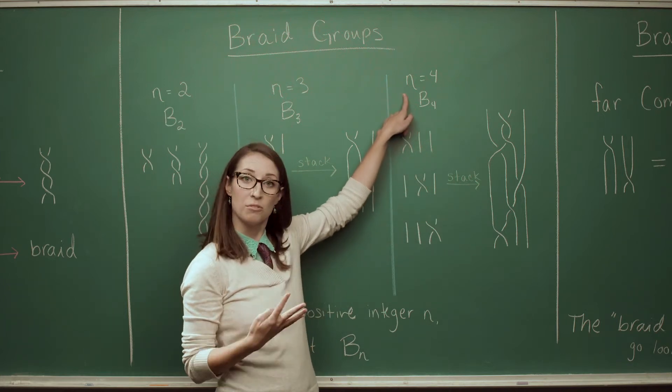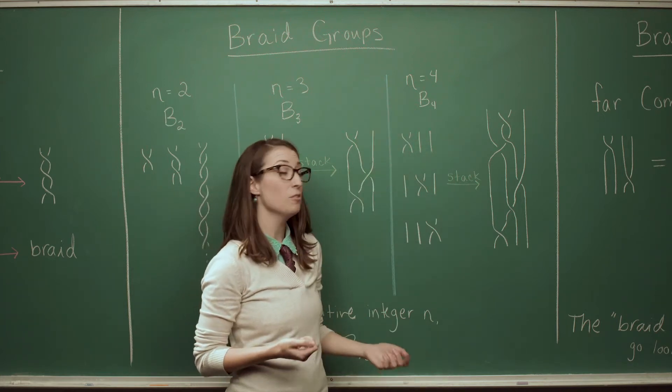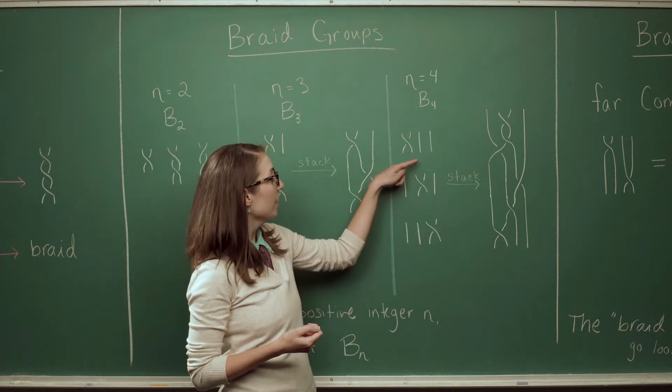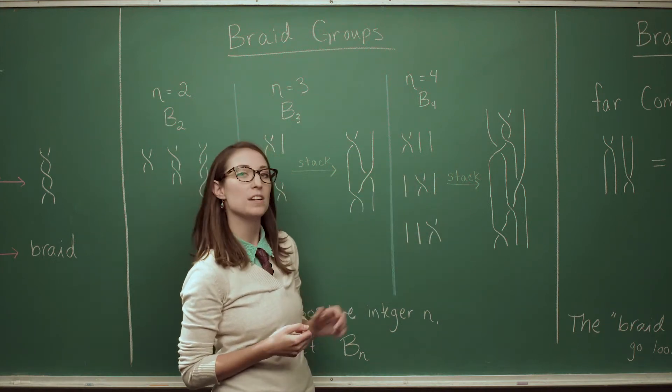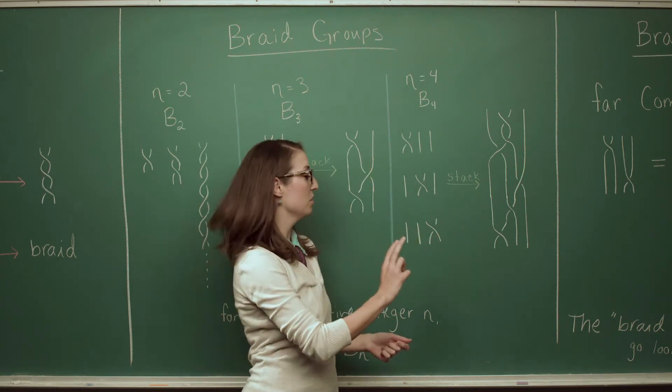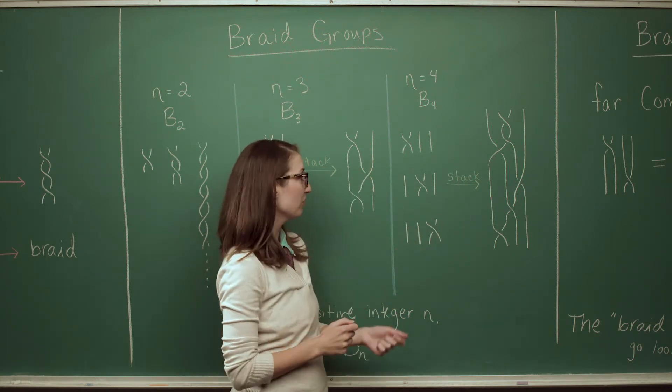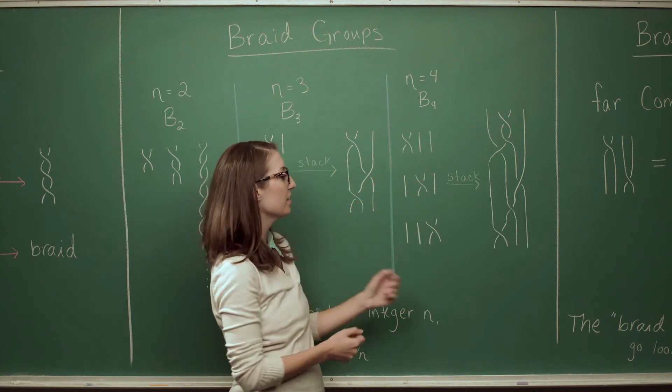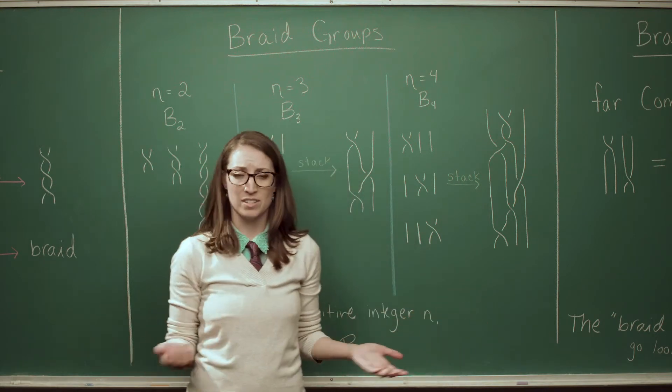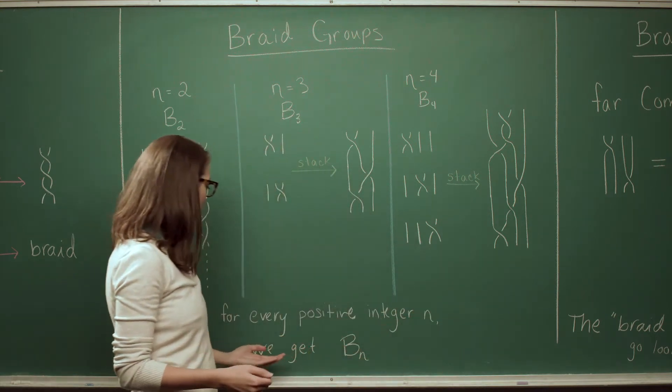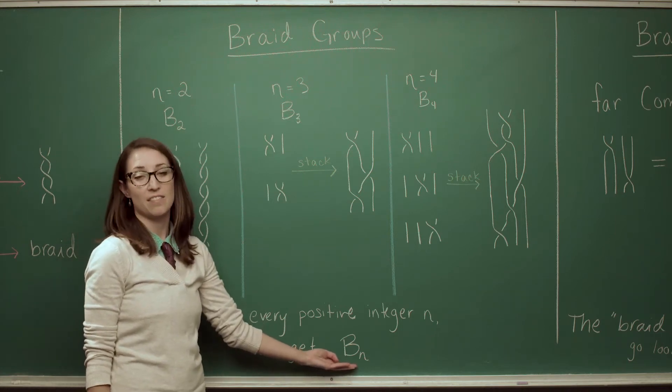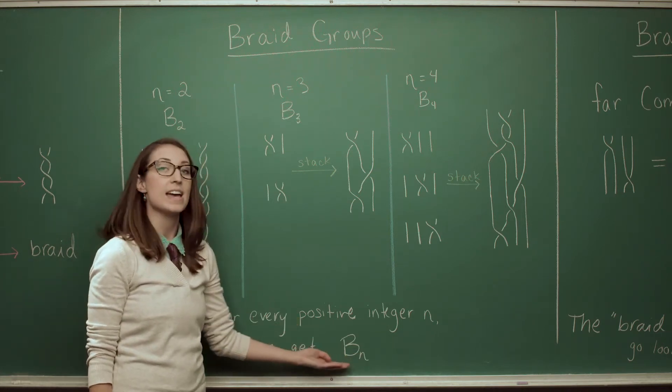If you give me the number four and we look at all the braids that have four strands we can get some pretty complicated braids to go on. And again we have sort of three little fundamental braids twisting the first two strands, twisting the middle two, or twisting the last two. And then stacking these pieces together we can create braids of all sort of complexity that we want. And there's nothing that tells us we have to stop at four. If you give me any positive integer n I can collect up all of the braids that have n strands. And we call that Bₙ.